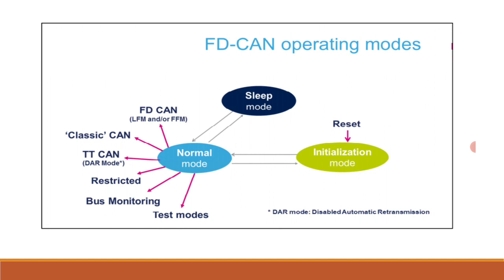The FD CAN has three main operating modes: initialization, normal, and sleep. After a hardware reset, the FD CAN enters initialization mode via software. In this mode, the peripheral must be configured: bit timings and RAM allocation. In bit timing configuration, the rate is set and the sampling point is adjusted according to the actual serial bus line. The CAN controller then synchronizes itself with the CAN bus by waiting for 11 consecutive recessive bits.